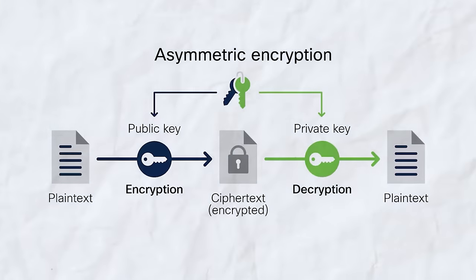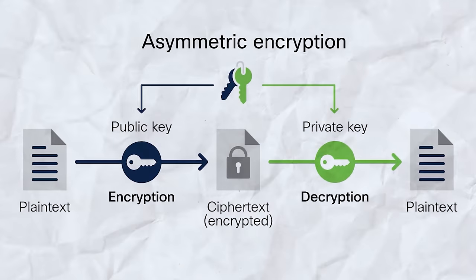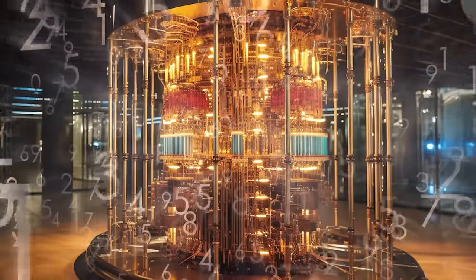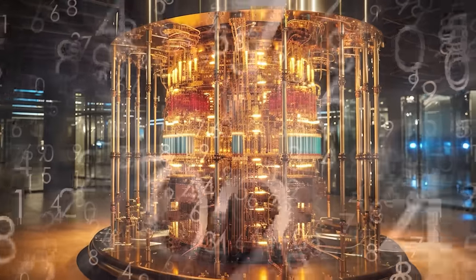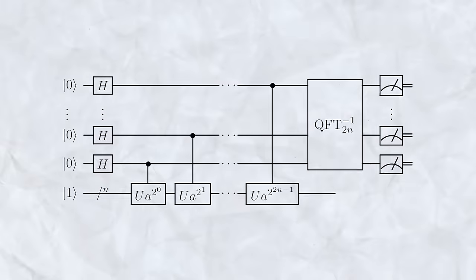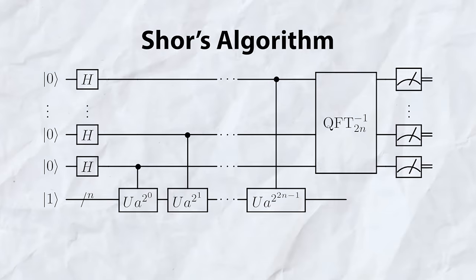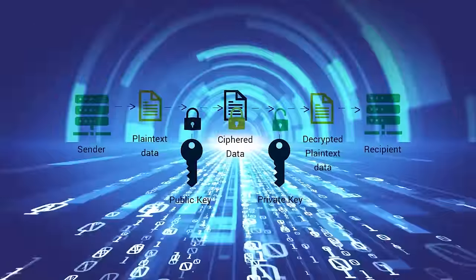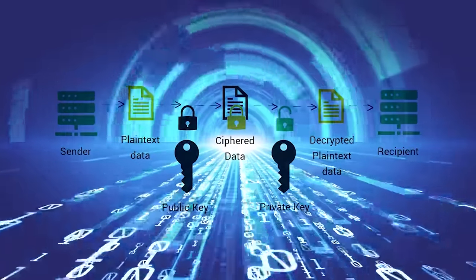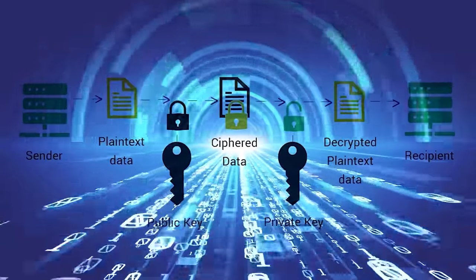Here's the thing. A lot of the encryption keeping your data safe relies on difficult math problems, like factoring giant numbers so big they'd take a regular computer forever to crack. But quantum computers could zoom through these problems in seconds thanks to something called Shor's algorithm. This is a recipe for disaster. Encryption systems like RSA, which keeps your online shopping and banking info safe, could be wide open. Scary, right?